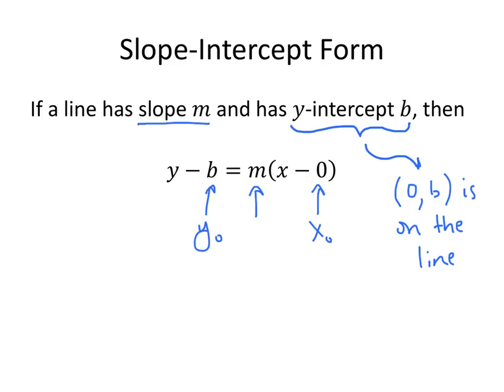And so all we've done here is use the point-slope form with our y-intercept being the point that was given. And so if we simplify that, we get y minus b equals mx on the right-hand side. And if we add b to both sides, we get y equals mx plus b.